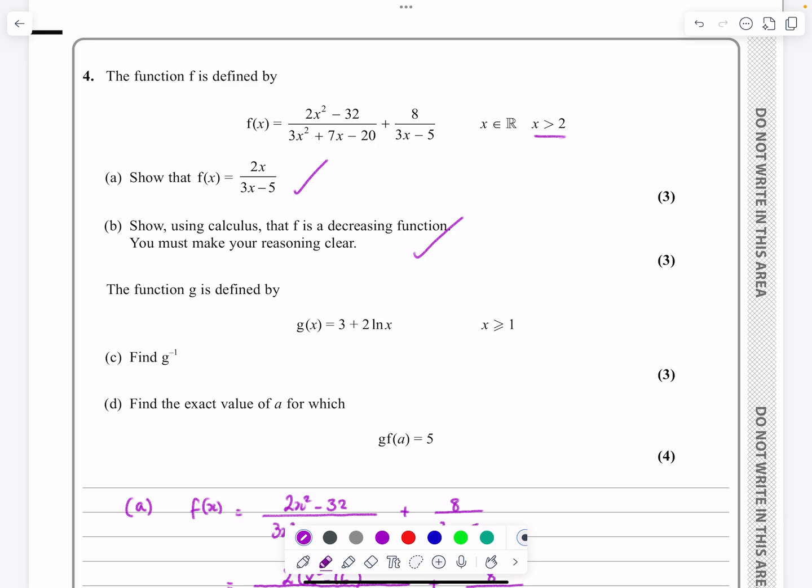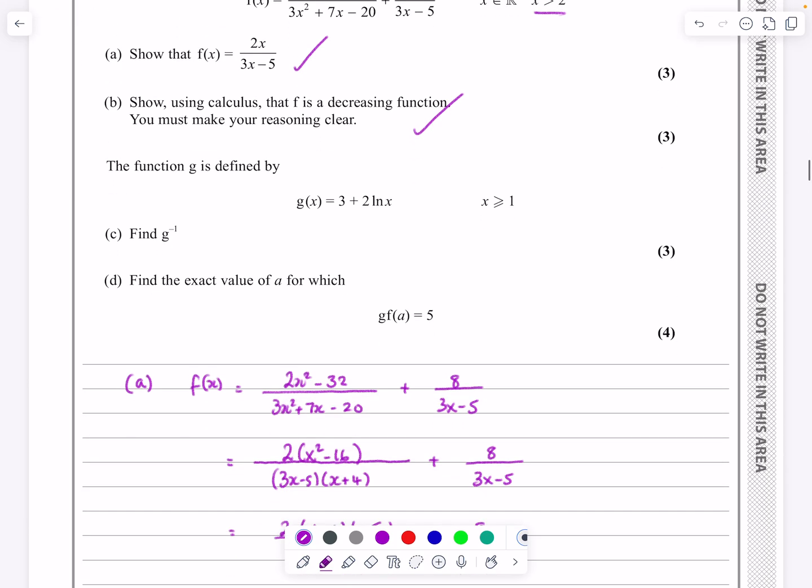So part b done as well. Okay, on to part c and d now, which are focusing a little bit more on our functions. We've got that gx is given by 3 plus 2 log x, x being greater than or equal to 1. And it says find the inverse of g.